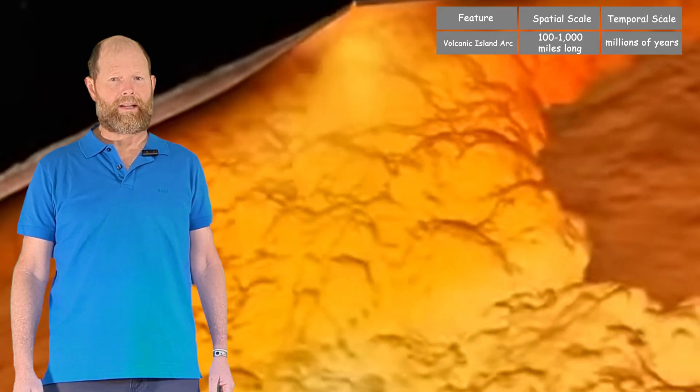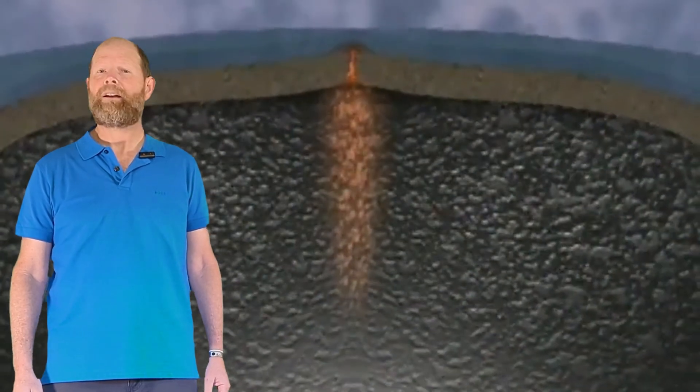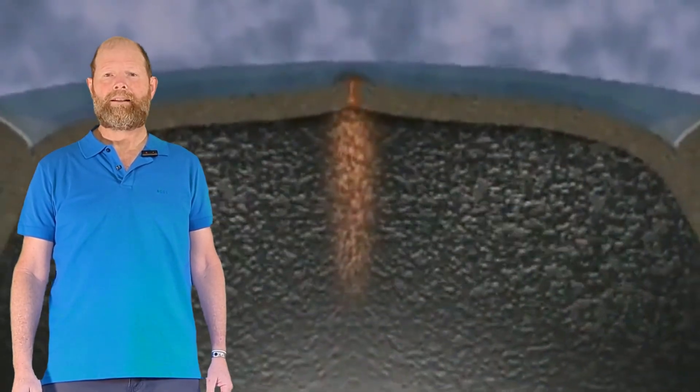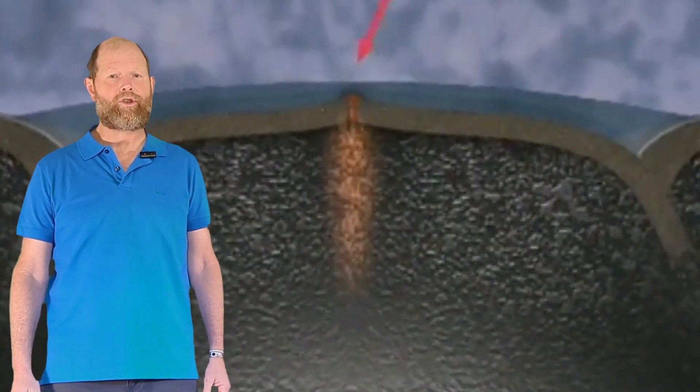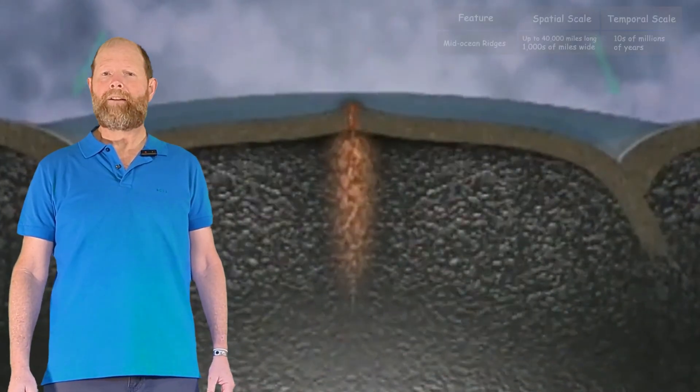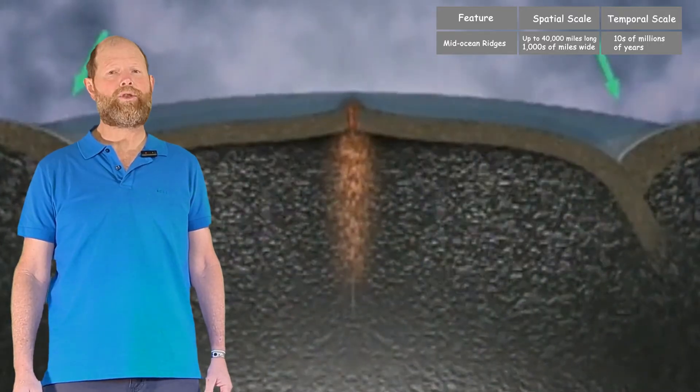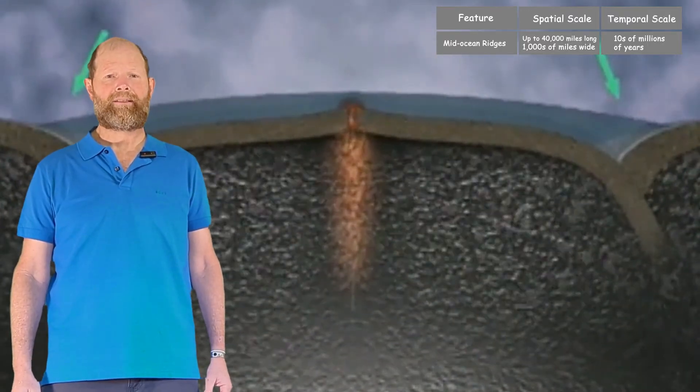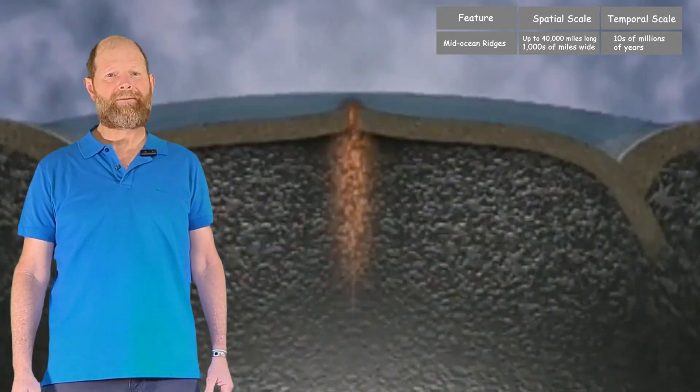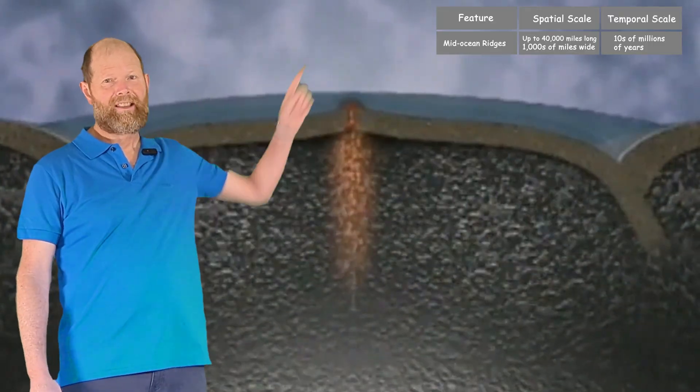The second type of plate boundary is divergent boundaries, where plates move away from each other. Molten rock from deep inside Earth rises to fill the gap, creating new crust. This often happens under the ocean, and we call it seafloor spreading. It forms mid-ocean ridges where the new lava piles up. For more information about seafloor spreading, check out this video.